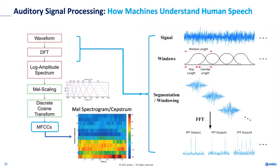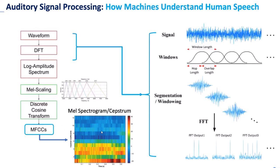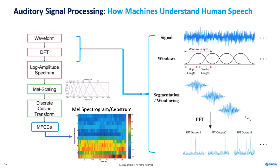Once we get these MEL cepstral coefficients, this information is fed to machine learning algorithms like CNN, RNN, or other AI algorithms. You can use it for speaker identification, identifying sound patterns, speaker recognition, and keyword detection. For example, you say "Alexa, turn on the light" — the keyword is Alexa, the action is turn on the light. You can have a VAD followed by this action. These are the pre-processing steps needed for man-to-machine translation.